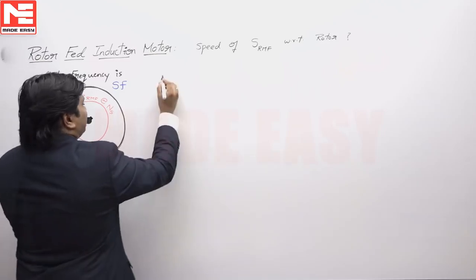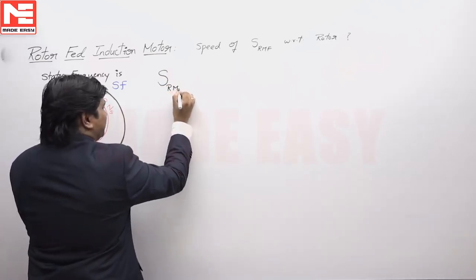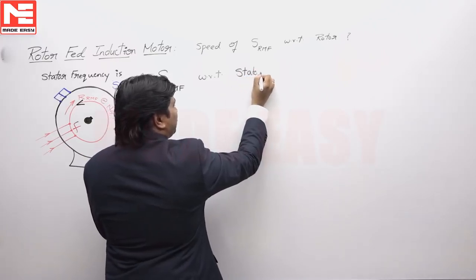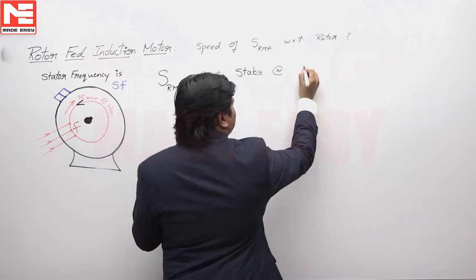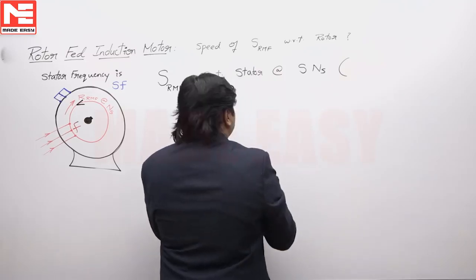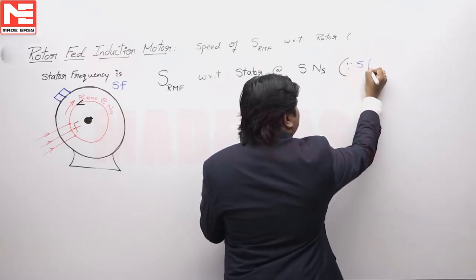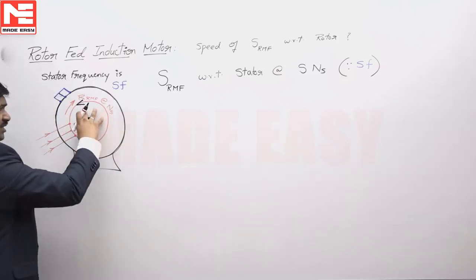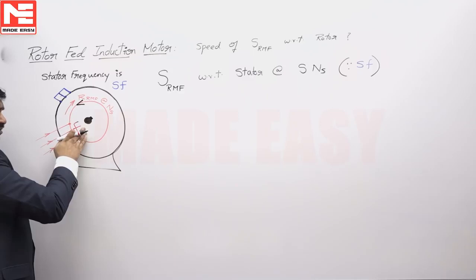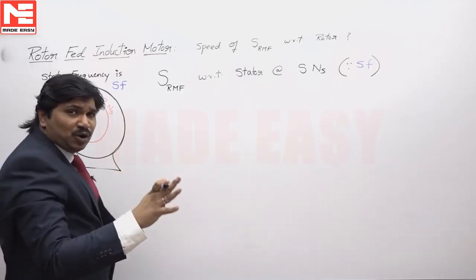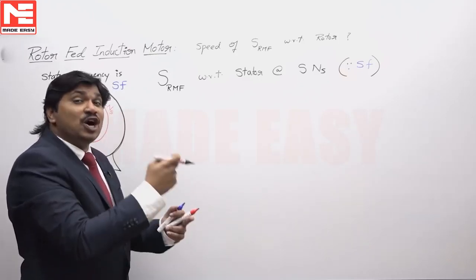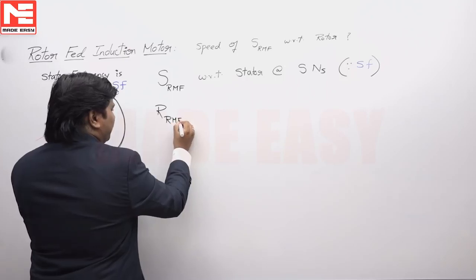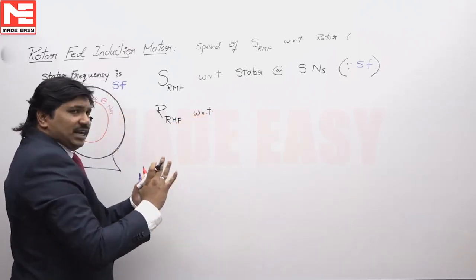The stator frequency is SF. The stator magnetic field with respect to a stationary point — if the frequency is SF, the stator RMF speed is SNS. If the frequency were F, the speed would be NS. Now, if the rotor were stationary and we apply frequency F, the rotor RMF would be at NS. But the rotor is not stationary — it is rotating in the opposite direction. That is why the rotor RMF with respect to a stationary point needs further analysis.